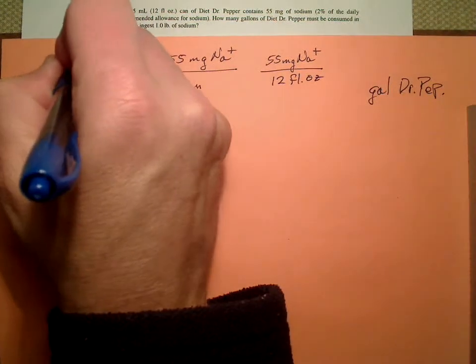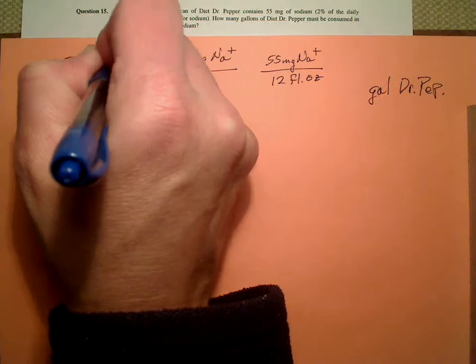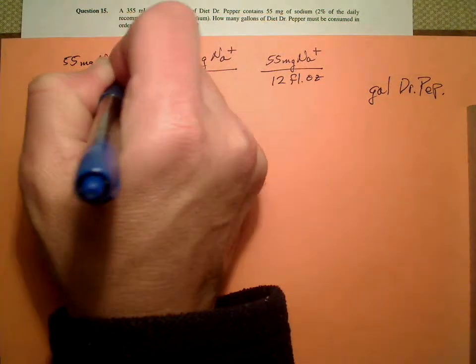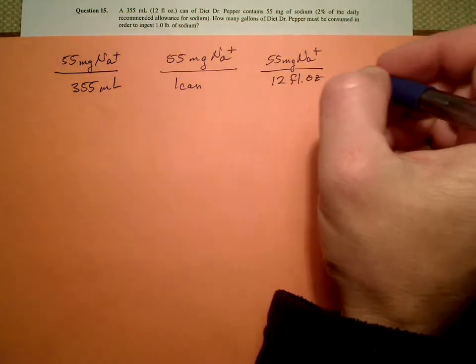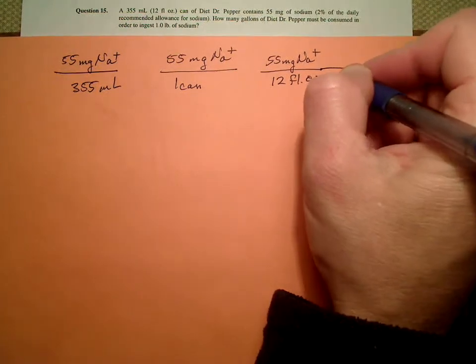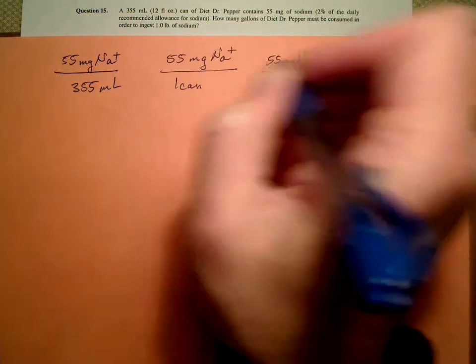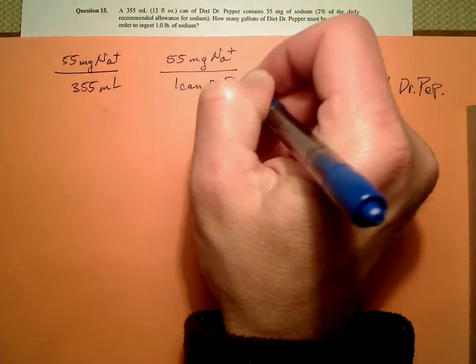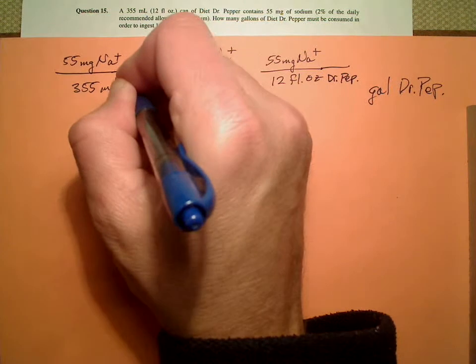Or we could say 55 milligrams of sodium per 355 milliliters of Dr. Pepper. These are 12 fluid ounces of Dr. Pepper, this is Dr. Pepper, Dr. Pepper.